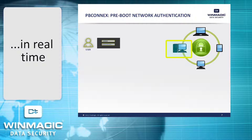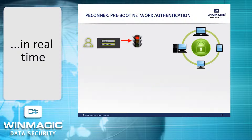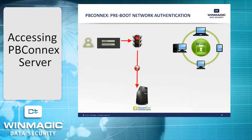Here, a user wants to access one of the devices in the group at right. He enters his login credentials at SecureDoc's pre-boot login. In our example, this user does not have an encryption key file on this device. The pre-boot authentication process now accesses the PB-Connects server over the network to determine if this user can be permitted access to this device.